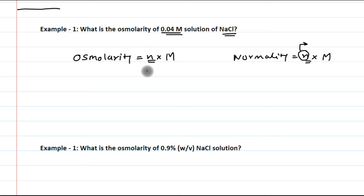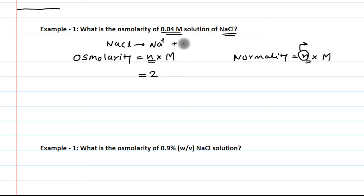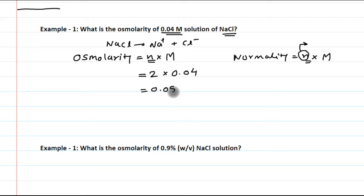What is the osmolarity of a 0.04 molar solution of sodium chloride? Using osmolarity = n × M, n = 2 because NaCl gives 2 particles — sodium and chloride — multiplied by the molarity 0.04. The answer is 0.08. So the osmolarity of a 0.04 molar NaCl solution is 0.08.